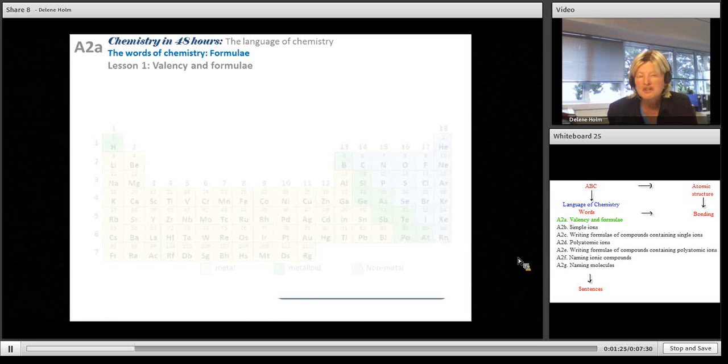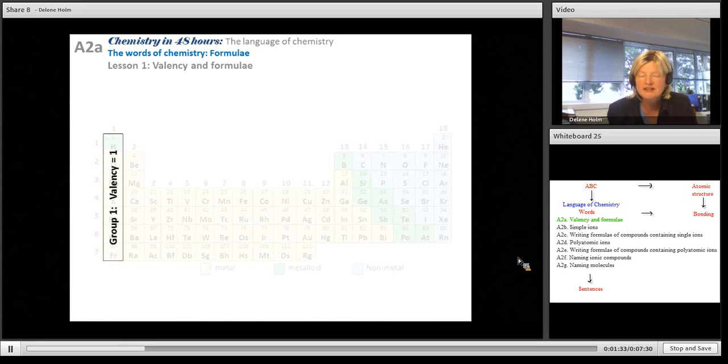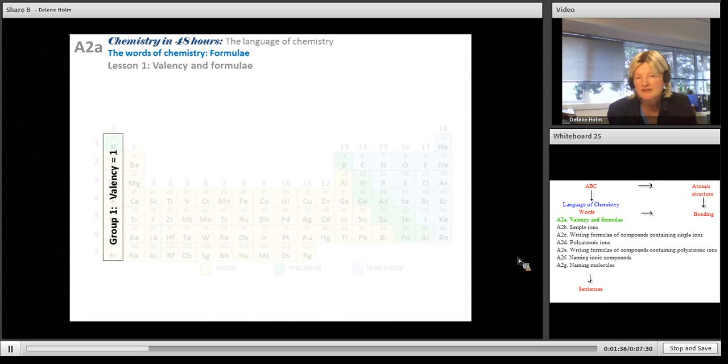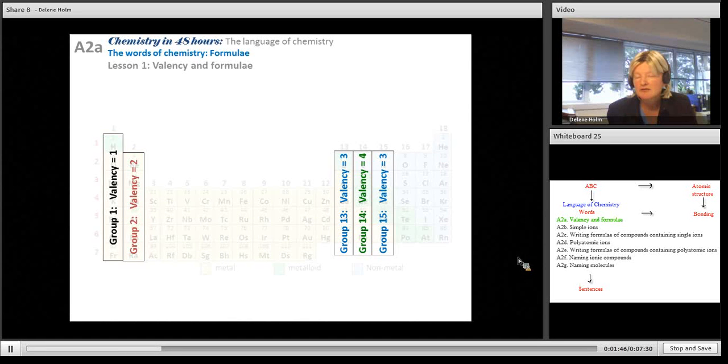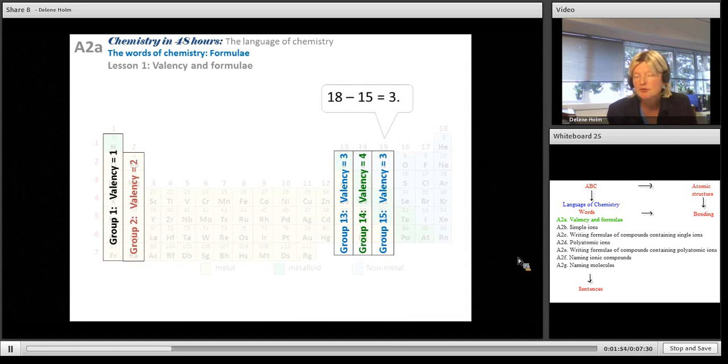Here's a periodic table and we can use it to work out the valency, particularly if you've learned them by group. Group 1 elements have a valency of 1, Group 2 valency of 2, Group 13 valency of 3, Group 14 valency of 4. Now it starts to go down. Nitrogen and phosphorus in Group 15 have a valency of 3. We can work it out by saying 18 subtract the group number. 18 subtract 15 equals 3. Can you work out what the valency will be for elements in Group 16?